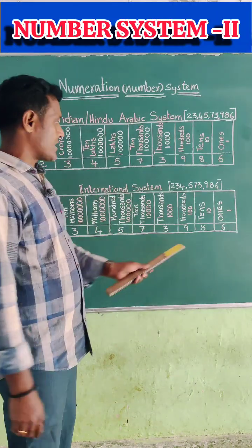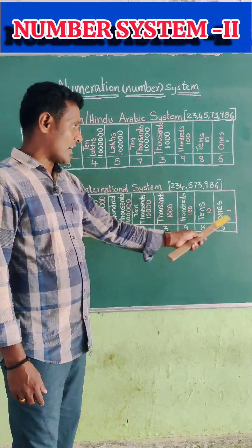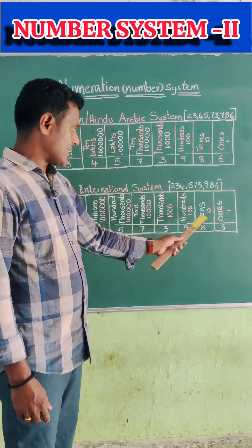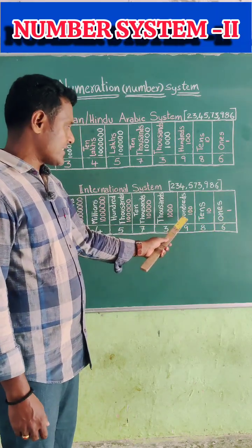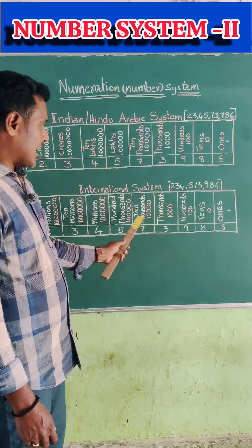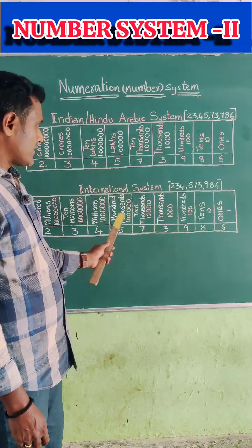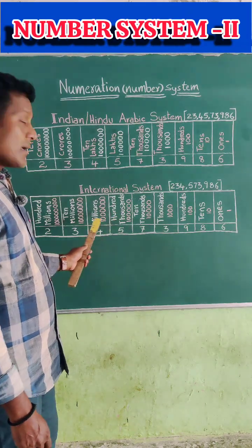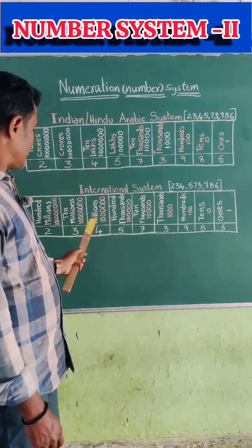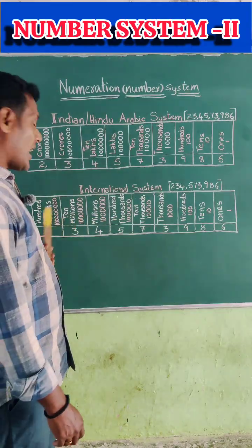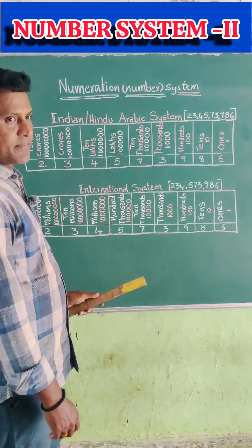According to the international number system, the place values are ones, tens, hundreds, thousands, ten thousands, hundred thousands, millions, ten millions, hundred millions.